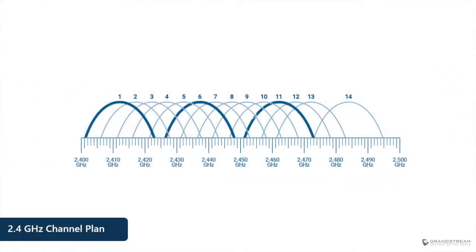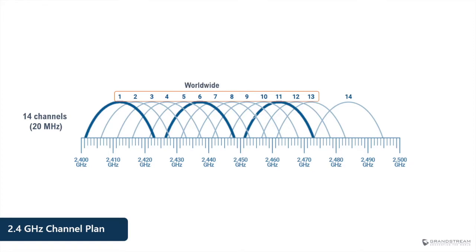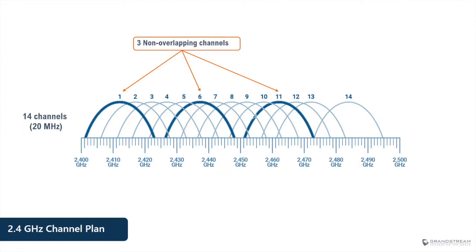Let's start with the 2.4 gigahertz channel plan. This band offers 14 overlapping channels of 20 megahertz. In North America only 11 channels are available, while in Europe and the rest of the world channels 1 to 13 are available. Japan is the only country where all 14 channels are available. Channels 1, 6, and 11 are considered non-overlapping channels, and it is important to select one of these when setting up your Wi-Fi network for 2.4 gigahertz clients.